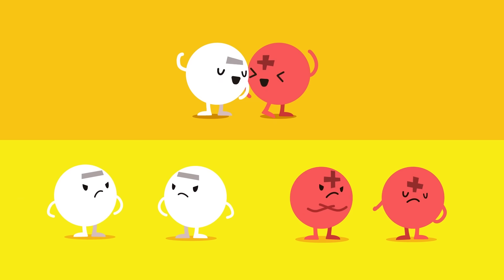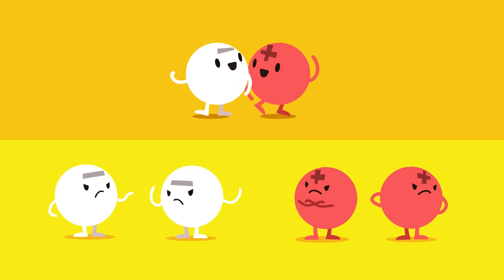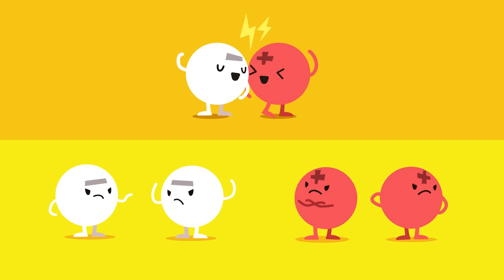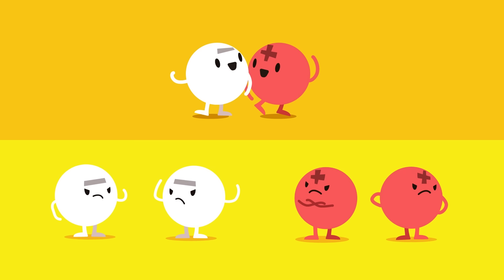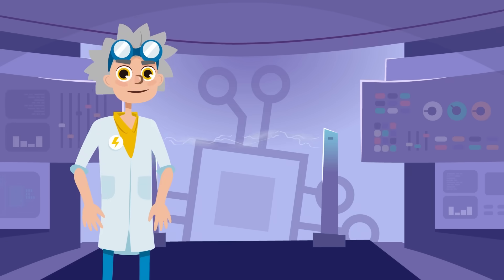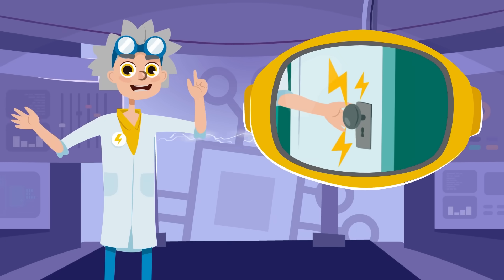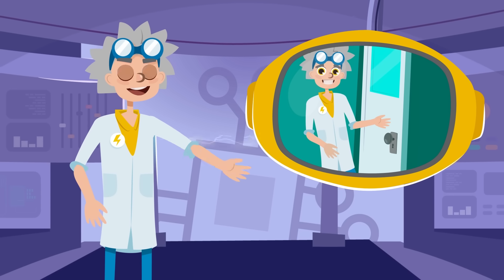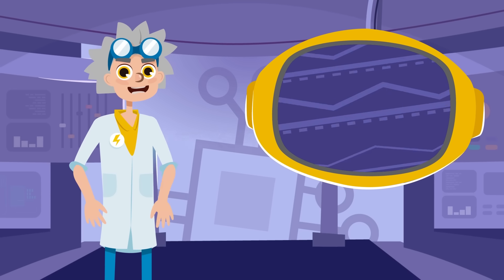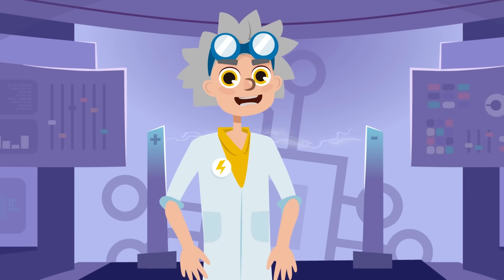When two objects have the same charge — either positive or negative — they move away from each other, or repel each other. Now we know why sometimes some objects give us a shock: it's because we send the excess electrical charge from one object to another.